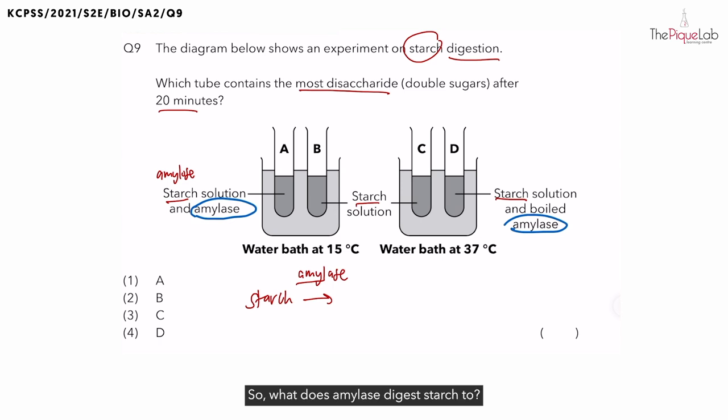So what does amylase digest starch to? If you recall, starch is digested to become maltose. Is maltose the final product of starch digestion? No, it is not. It is not a simple sugar. Maltose is in fact a double sugar or a disaccharide.